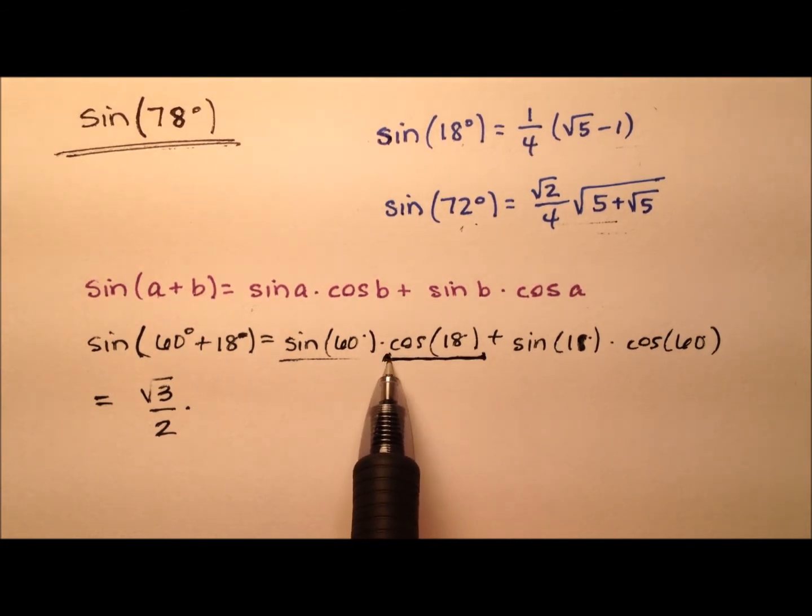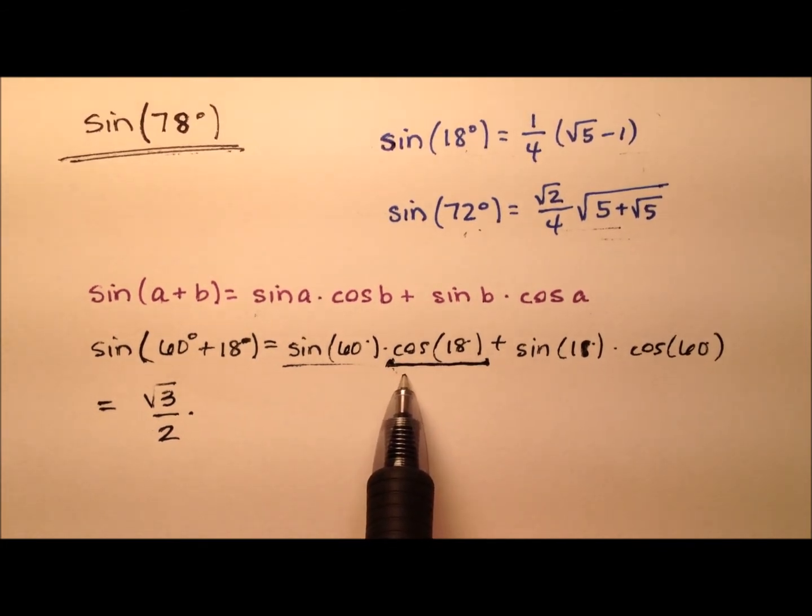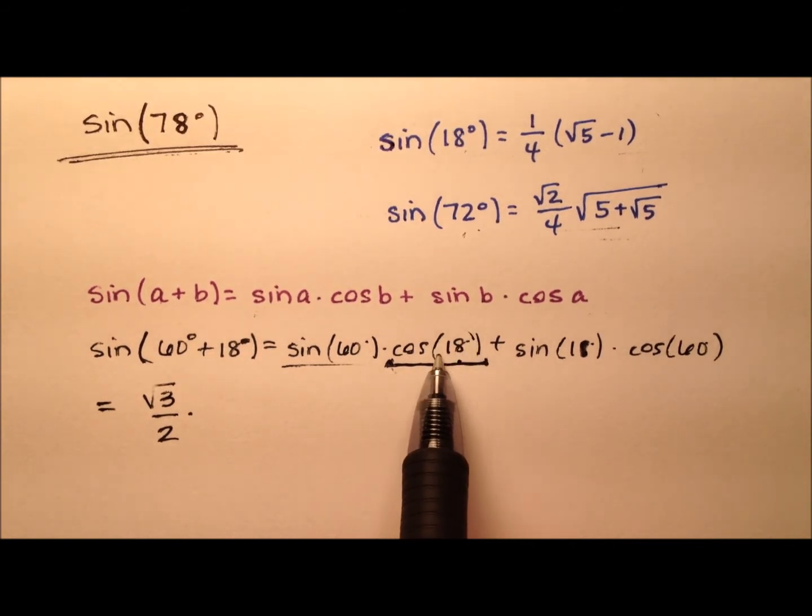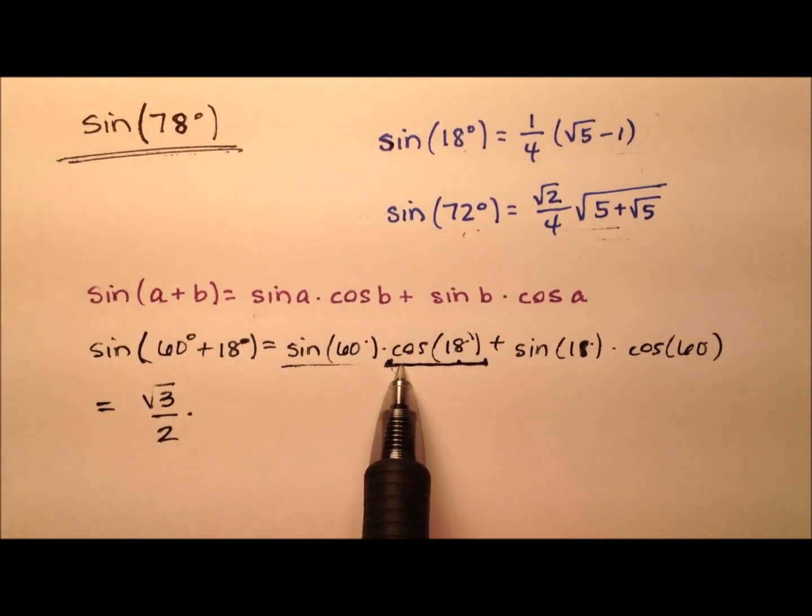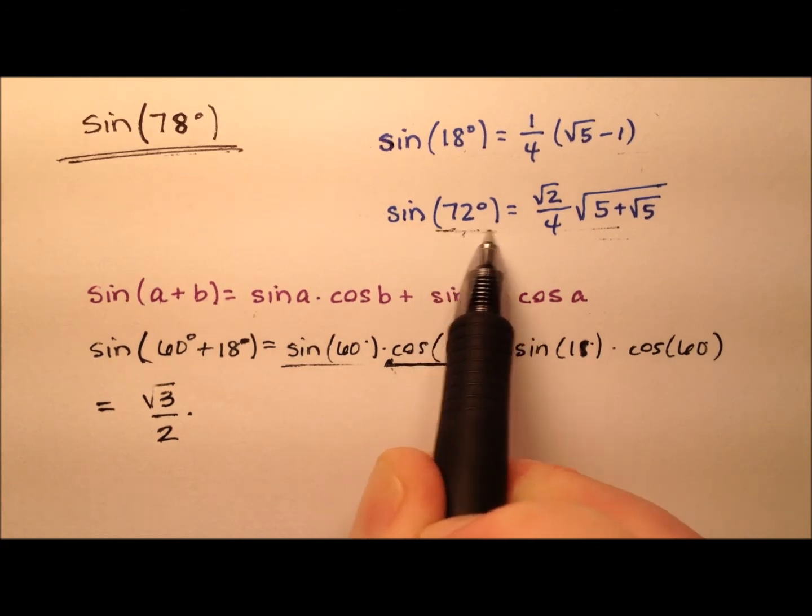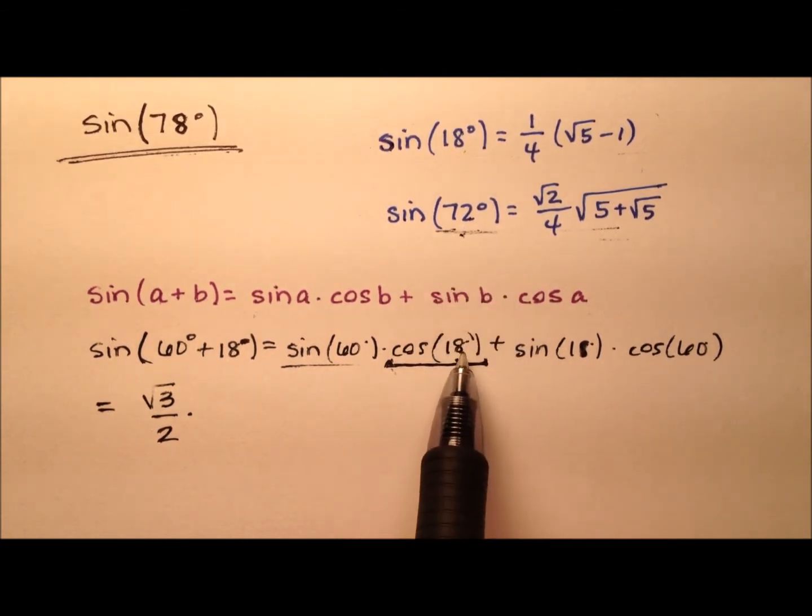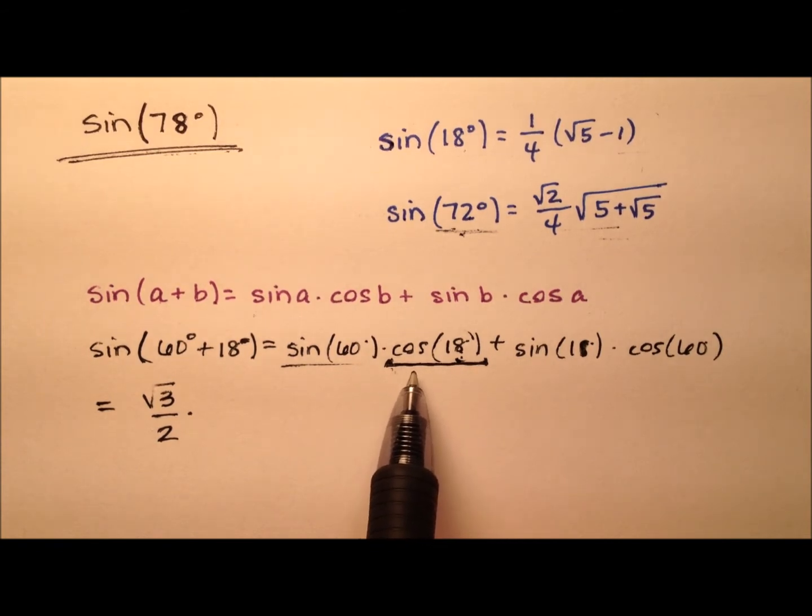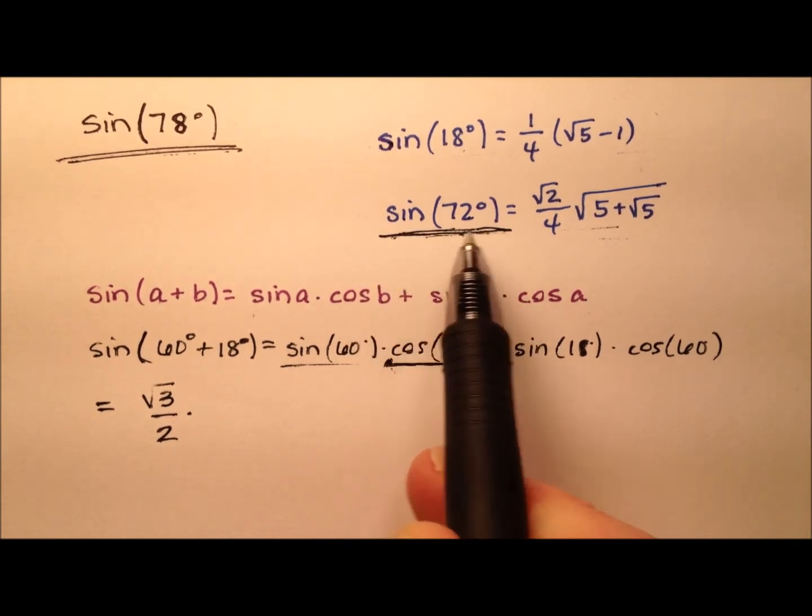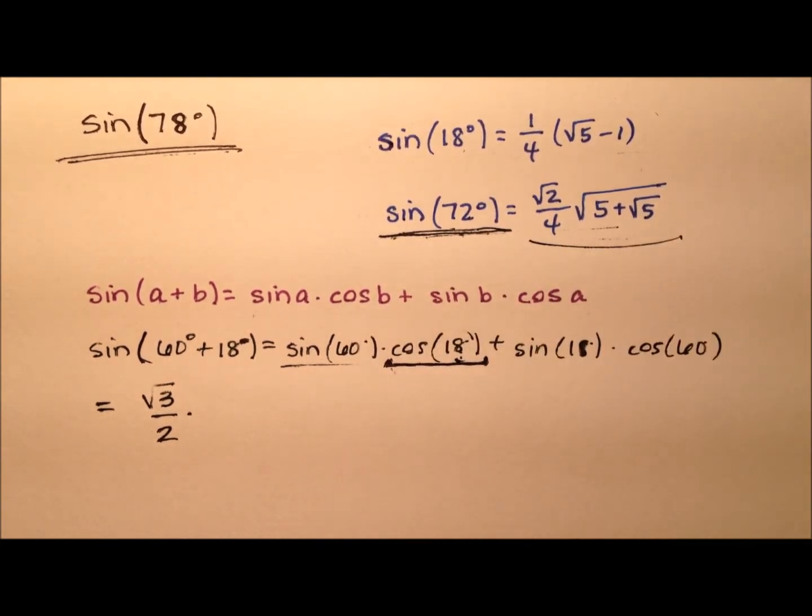But we do know that sine and cosine have a nice relationship, where the cosine of one angle, in this case 18 degrees, is the same as the sine of the complement of this angle. So, the complement of 18 will be 72, because 72 plus 18 adds up to 90 degrees. Instead of using the cosine of 18 degrees, we'll use the sine of 72. But actually, these are the same exact values anyway.